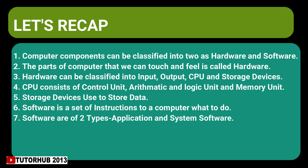Let's recap the session. Computer components can be classified into two: hardware and software. Parts of the computer that we can touch and feel are called hardware. Hardware devices can be further classified into input devices, output devices, CPU, and storage devices. The CPU consists of three main parts: the Control Unit, the Arithmetic Logic Unit, and the Memory Unit. Storage devices are used to store data such as songs, pictures, games, and movies. Software is a set of instructions that tells a computer what task to perform. There are two types of software: system software and application software.